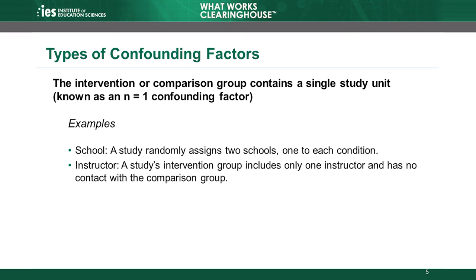For example, a study that randomly assigns two schools, one to each condition, has a confounding factor because the study cannot distinguish the effect of the intervention from the effect of the school where the intervention is implemented. But this type of confounding factor can also occur with a larger sample, such as when a single instructor provides the intervention to all students and has no contact with the comparison group. As we saw in the math specialist example, this is a confounding factor because it is impossible to determine whether the intervention alone is responsible for the observed differences, or the instructor is responsible for some or all of those differences.